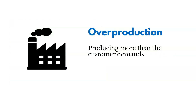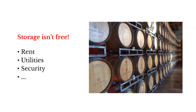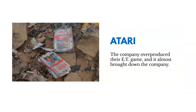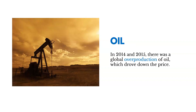Then there's the waste of overproduction — producing more than the customer actually demands. One problem is that you've got to store those materials, which could go bad, and you've got to pay rent, utilities, security, and so on — it gets expensive. Atari had this problem in the 80s: they overproduced their ET game, which almost brought down the entire company, and they ended up having to bury some of their extra product in a landfill. Another example is the oil industry — in 2014 and 2015, global overproduction of oil drove down the price significantly.